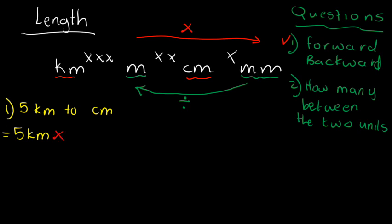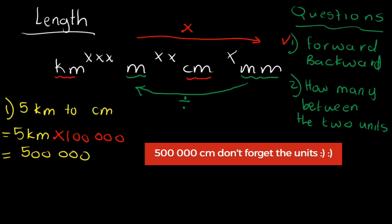Second question, how many stars between those two units? Between kilometers and centimeters, I see that there are five stars. That means it's one and five zeros. That's a hundred thousand. And therefore, my answer will be five hundred thousand. Right, then let's look at the second question.